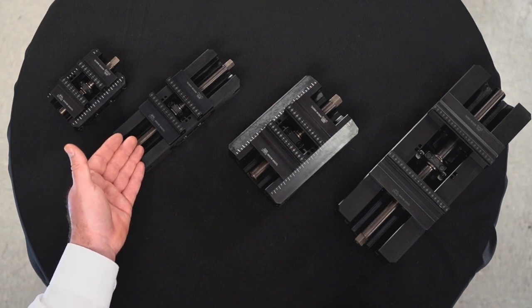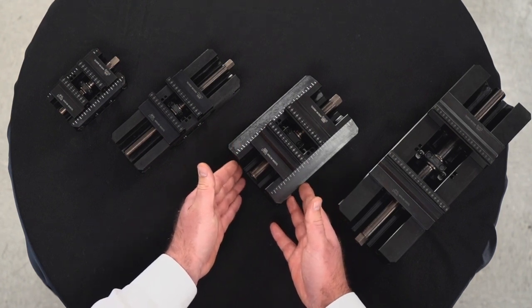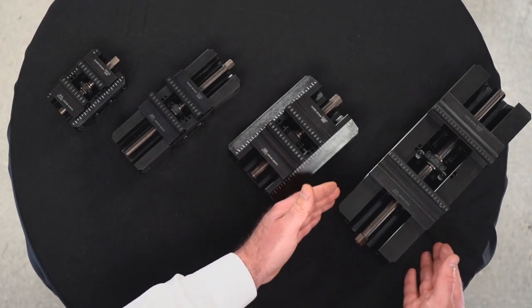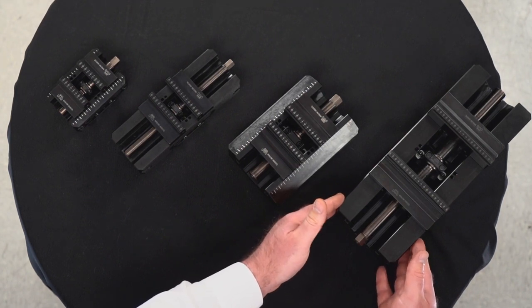We then move to our 80 millimeter wide jaw width for our 52 series family. We then move to the 80 millimeter wide jaw width for our 96 family, and finally our 125 millimeter jaw width for our 96 series family.